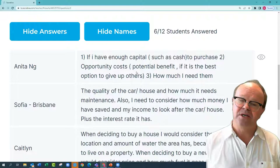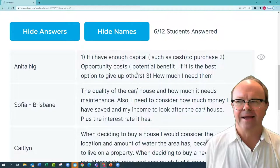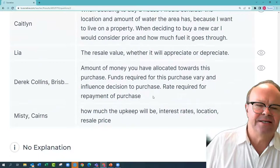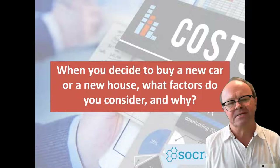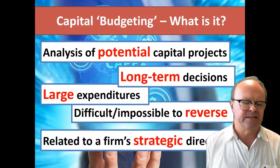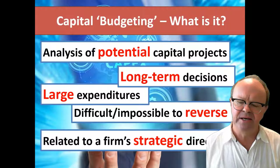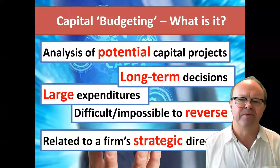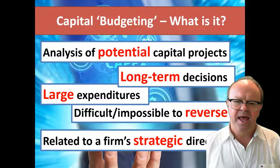And how much do I need the asset — how much do I need a car or somewhere to live? So those are some of the factors people consider with buying a house or car. We're going to be looking at capital investment decisions for businesses, investing for the longer term. Capital budgeting is an analysis of potential capital projects. These are long-term decisions — like Ryman Healthcare building new retirement villages. They're typically large expenditures, and these capital decisions are difficult or impossible to reverse.